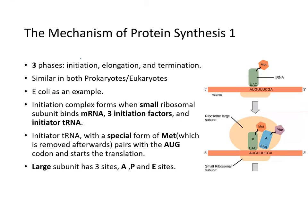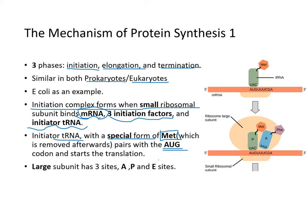The mechanism of protein synthesis has three stages — initiation, elongation, and termination — similar in both prokaryotes and eukaryotes. Using E. coli as an example: the initiation complex forms when the small ribosomal subunit binds the messenger RNA. Three initiation factors and an initiator tRNA then combine with the small ribosomal subunit. The initiator tRNA is a special methionine-bearing tRNA that pairs with the AUG codon on the messenger RNA and starts translation. Then the large subunit binds, and it has three sites: the A site, P site, and E site.